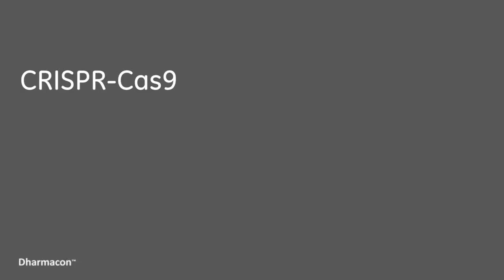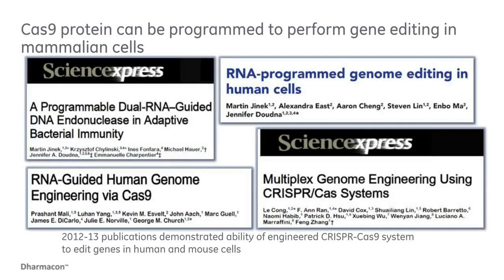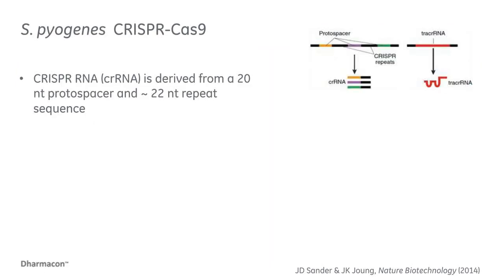Starting in 2012, the first studies were published demonstrating that the Streptococcus pyogenes CRISPR-Cas9 system can be adapted for use in human and mouse cells. Since then, there have been thousands of publications utilizing CRISPR-Cas9 in mammalian cells, as well as editing genomes from other organisms. The utility of CRISPR-Cas9 has revolutionized how quickly we can knock out genes to address our biological questions. Let's take a quick look at the mechanism so all the experimental components we discuss today will make sense.